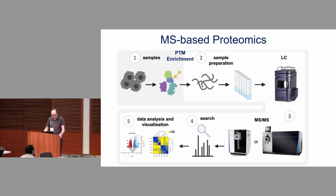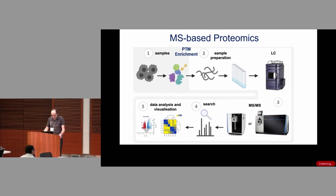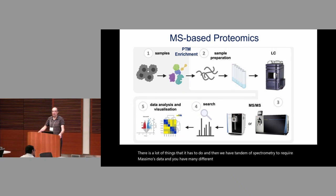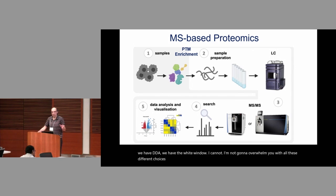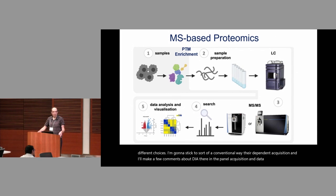Then we have a mass spectrometry step, and tandem mass spectrometry to acquire mass and mass data. There are many different modes for collecting the data: we have DIA, DDA, and the wide window. I'm not going to overwhelm you with all these different choices — I'm going to stick to a conventional way, data-dependent acquisition. I'll make a few comments about DIA, data-independent acquisition and data analysis, at a few places in my presentation.